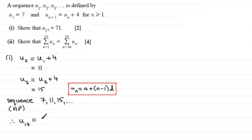So u₁₇ is going to be a which is 7 plus n minus 1 so that's 17 minus 1 times the common difference which is 4. So what we've got here is 16 times 4 which is 64 plus another 7. Well that's going to be 71, and that's what we had to show.